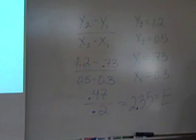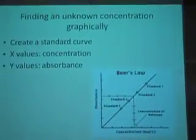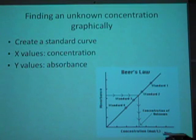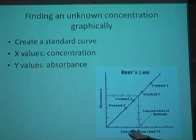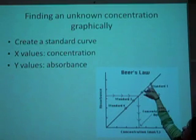You're also going to be asked, in your lab, to find an unknown concentration graphically. We learned how to do it with the Beer-Lambert Law, but if we graph all of our concentration versus absorbance values, we can create a line of best fit.